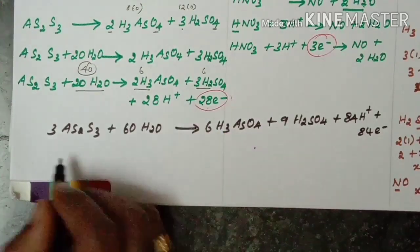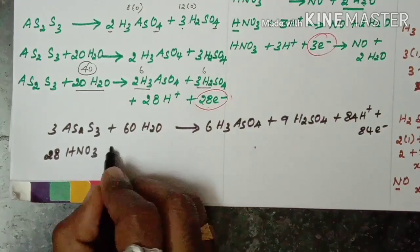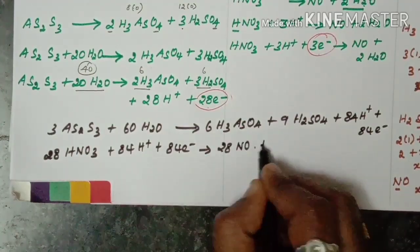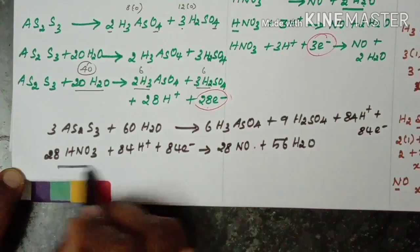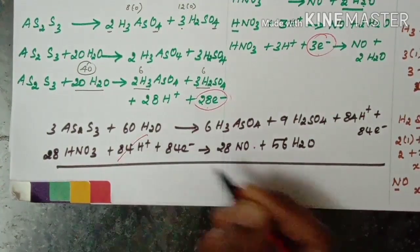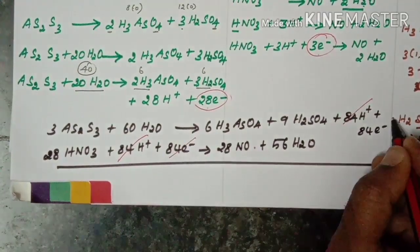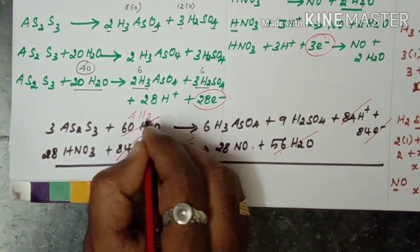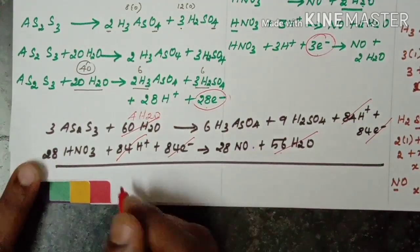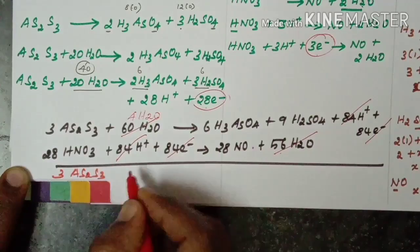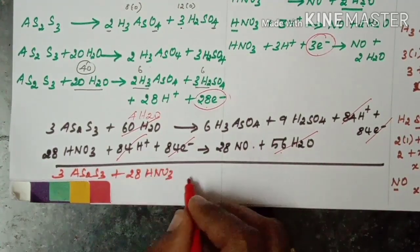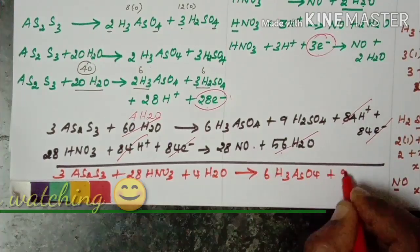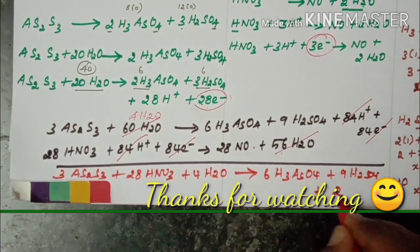For the reduction side multiplied by 28: 28HNO3 plus 84H+ plus 84 electrons gives 28NO plus 56H2O. The 84H+ and 84 electrons cancel. Water: 60 on left minus 56 on right leaves 4 water molecules. Final balanced equation: 3AS2S3 plus 28HNO3 plus 4H2O gives 6H3AsO4 plus 9H2SO4 plus 28NO.